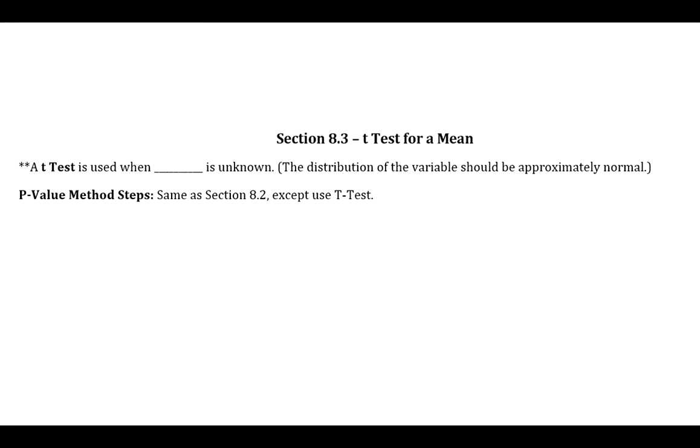In section 8.3, we're still going to be dealing with hypothesis testing regarding means, only now we're going to look at the situation when sigma is unknown. Okay, so that's the big difference between last section and this section. Last section, sigma was known, so we did the Z test and we learned the two different methods for that. In this section, sigma is unknown.